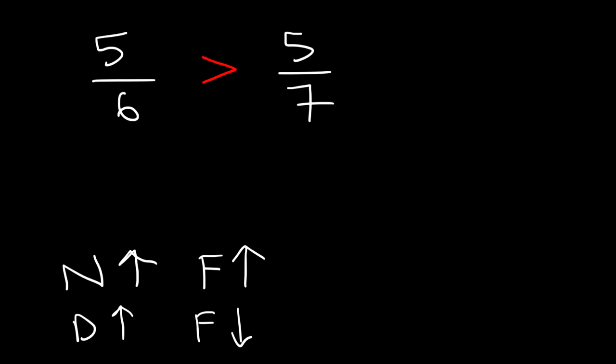There are different ways to confirm this answer. One way is by converting the fraction into a decimal. If you type in 5 divided by 6 in your calculator, you should get 0.83 — the 3 is repeating, but I'm going to round it to the nearest hundredth. If you type in 5 divided by 7, it will give you 0.71. So 0.83 is greater than 0.71, and therefore 5 over 6 is greater than 5 over 7.